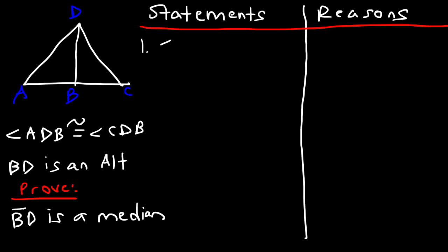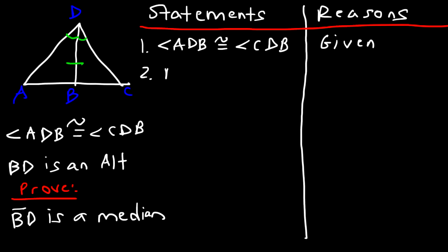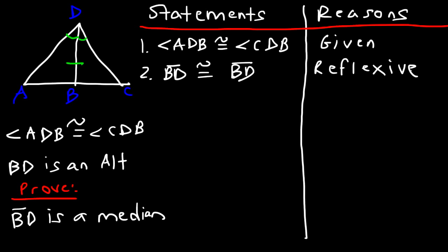Let's start with number one: angle ADB is congruent to angle CDB — that's given. Let's mark it on the graph: ADB and CDB are the same. In step two, BD is the common side, so BD is congruent to itself, based on the reflexive property. In step three, BD is an altitude — that's given.